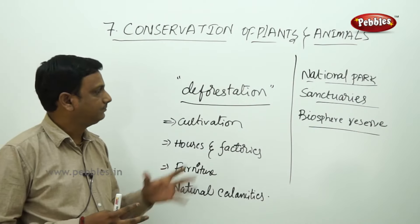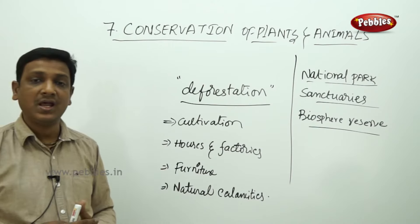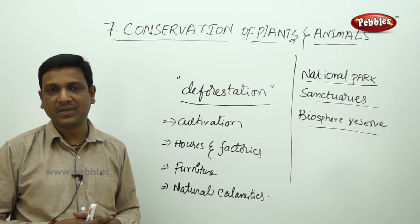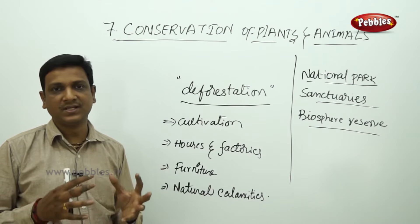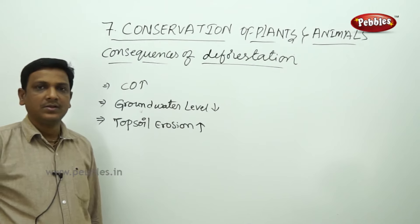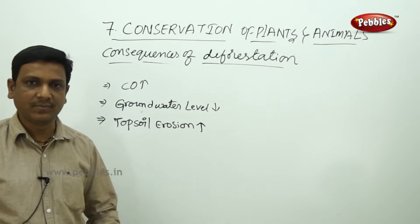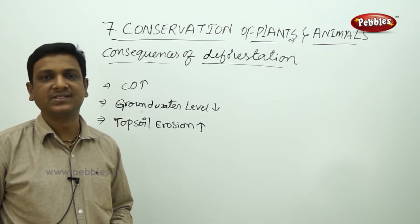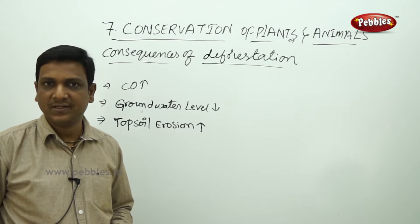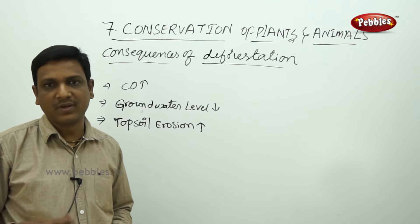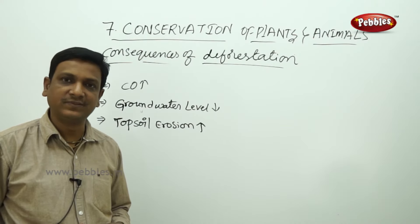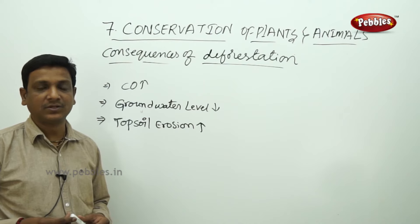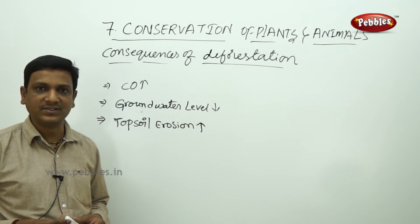In this chapter, we are going to learn about deforestation, national parks, sanctuaries, biosphere reserves, which plants and animals are becoming extinct, and what care is taken by the government, organizations, and NGOs to conserve them. We need more land for agriculture, industries, and many other purposes — the demand is endless, and humans are even searching for land on other planets. But what are the consequences of all this?